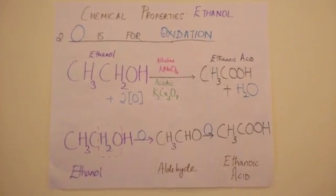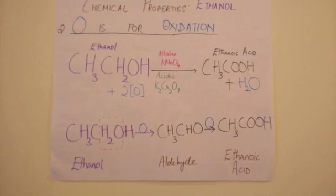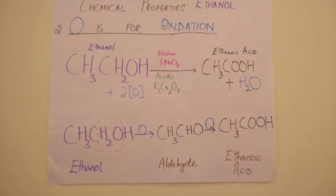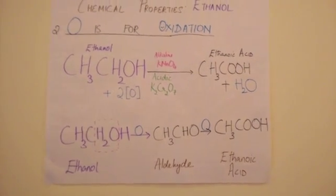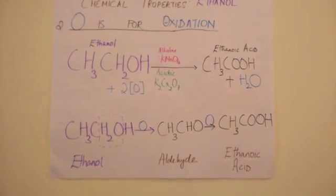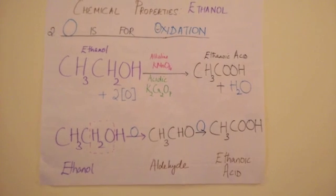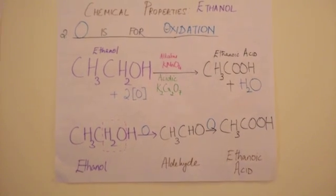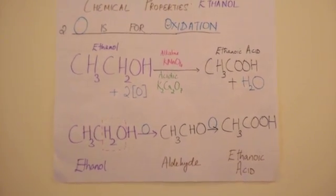The second reaction: O is for oxidation. Oxidation means the substance takes in oxygen and is converted to its oxidized form. Ethanol on the left takes in two oxygen atoms. You need an oxidizing agent — either alkaline potassium permanganate or acidic potassium dichromate — and you get ethanoic acid on the right, which you may know as acetic acid or vinegar, plus water.